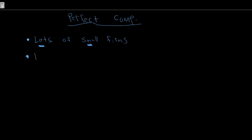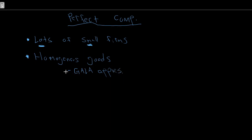Second, all of these tiny firms are going to sell homogenous goods. Homogenous just means all the same — all the goods being sold by all these tiny firms are identical in the eyes of the consumer. When you go to the store to buy your gala apples, the two apples sitting right next to each other in the bin could very likely be coming from different orchards, and you have no way to differentiate between them.